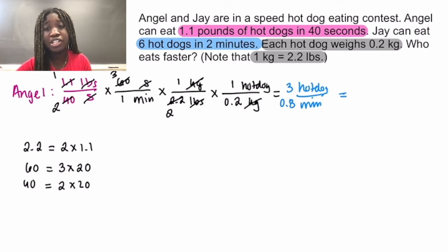We know that 3 divided by 8 is 0.375, so therefore 3 divided by 0.8 is 3.75. So we have 3.75 hot dogs per minute.